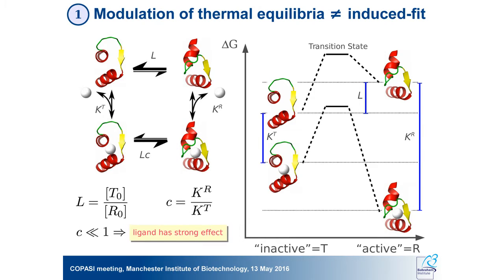A ligand binds to both states, and because the two states have different structures the affinity will be different, so the ligand will stabilize one of the two states. We have constant C, which is the ratio of affinity in the two states. If C is very small, the ligand has a very strong effect; if C is one, the ligand has no effect on the conformational transition. Thanks to thermodynamics, knowing the allosteric constant and the affinity for the two states, you can compute the overall equilibrium constant.